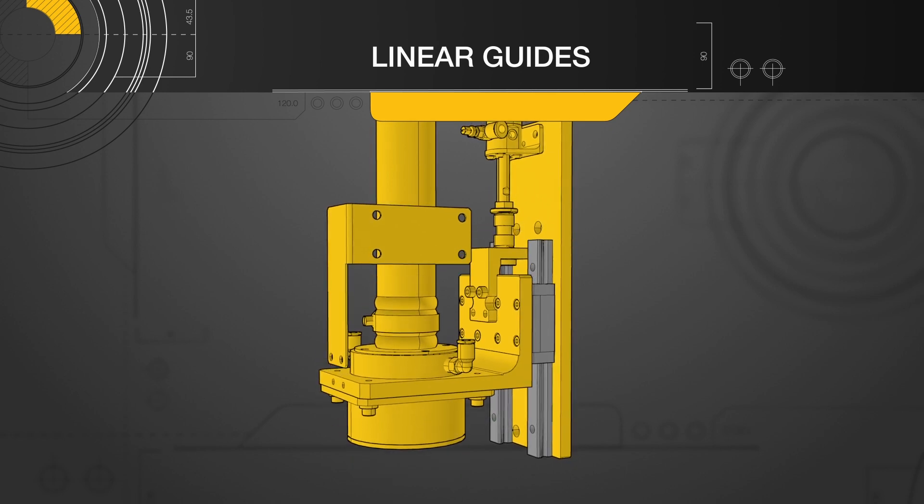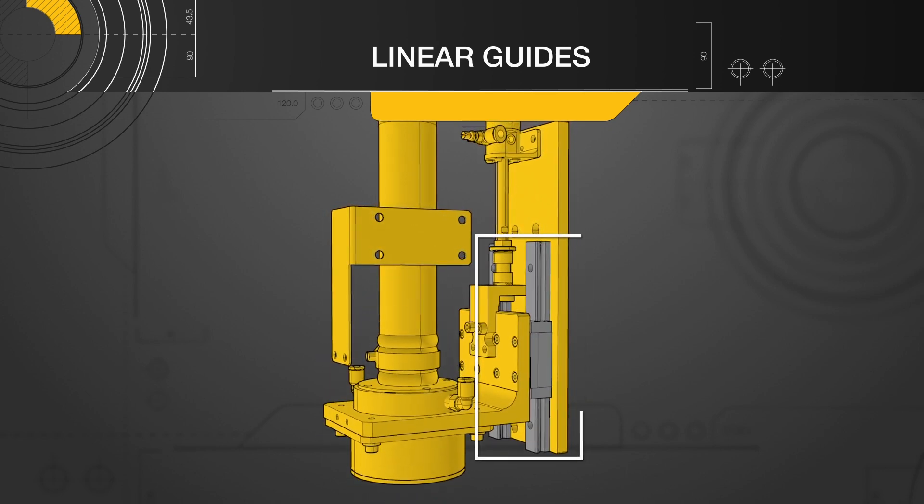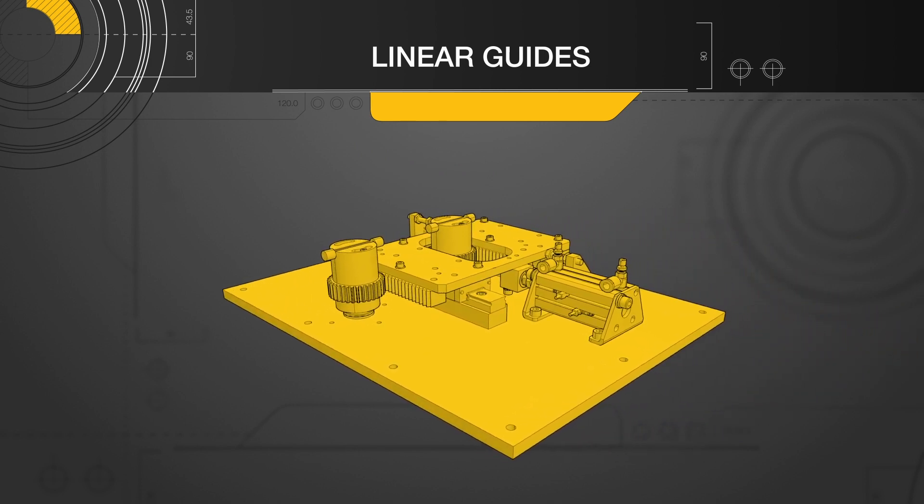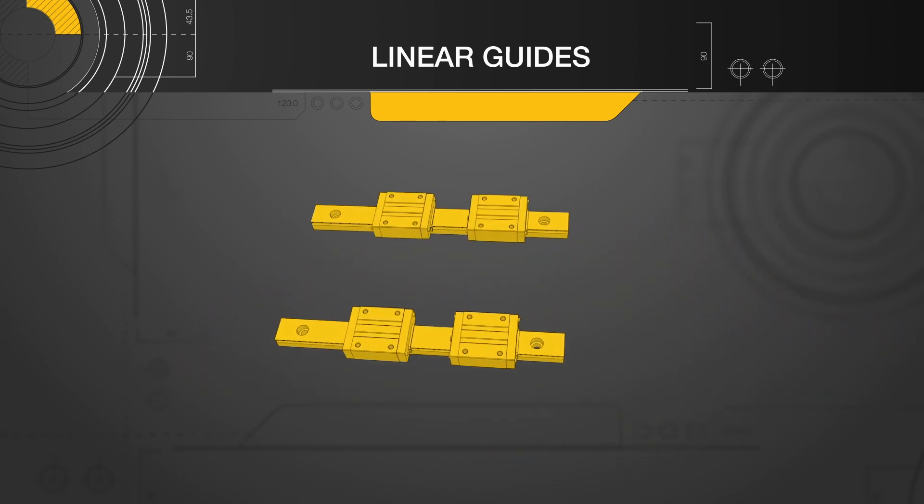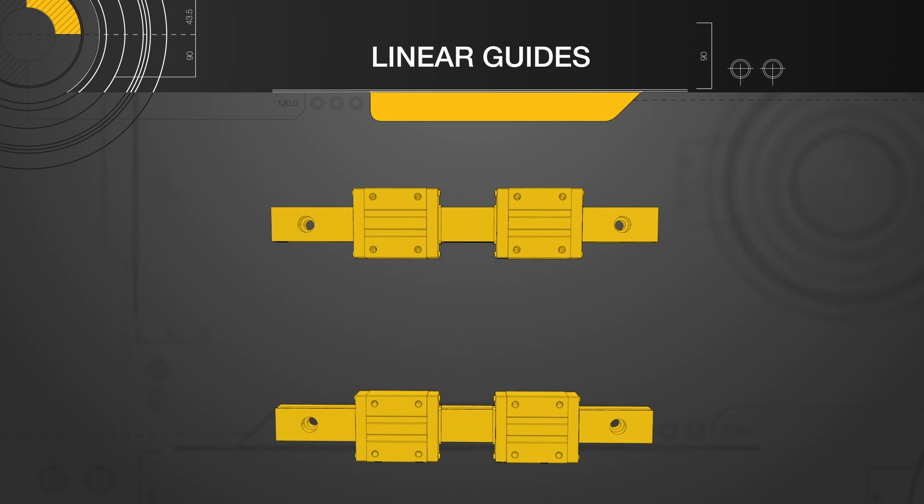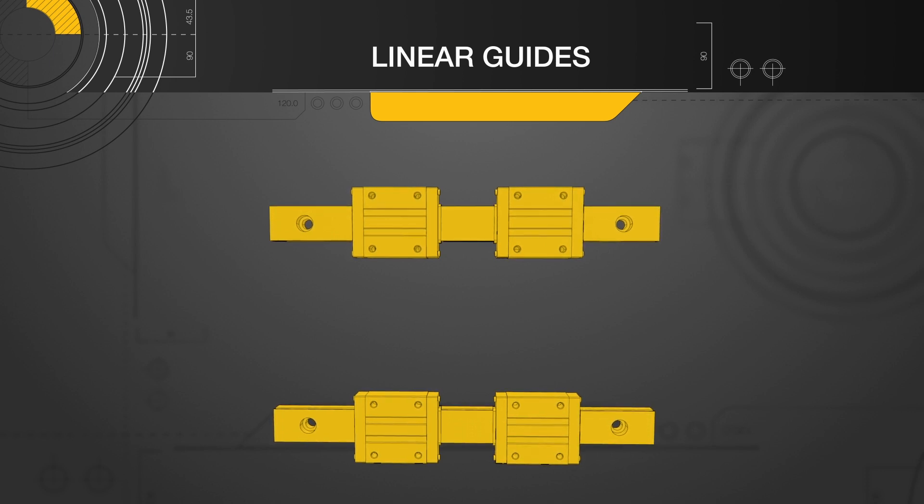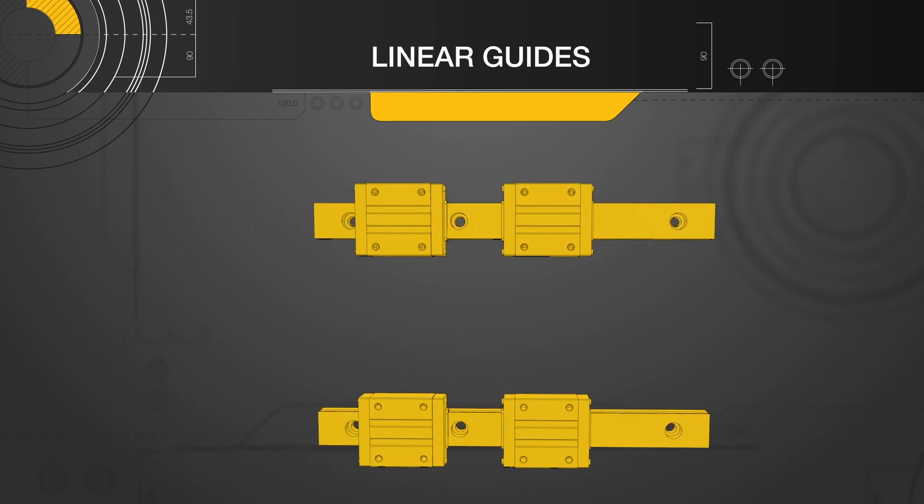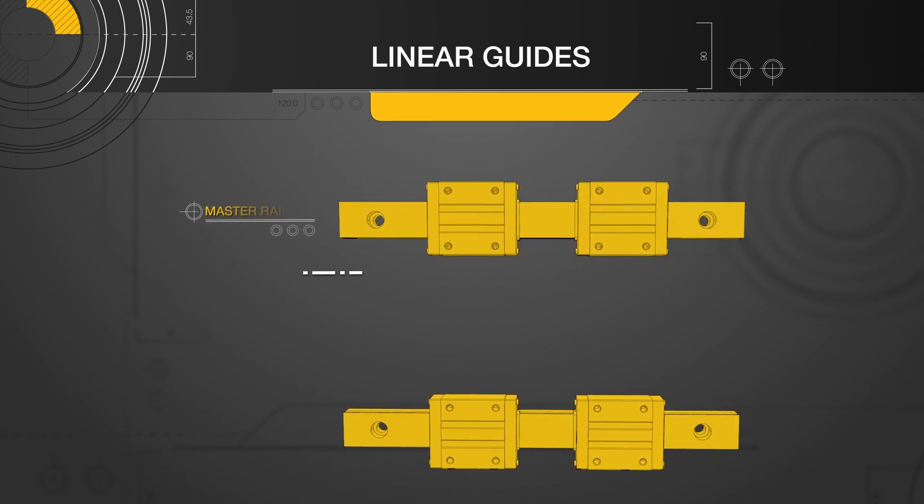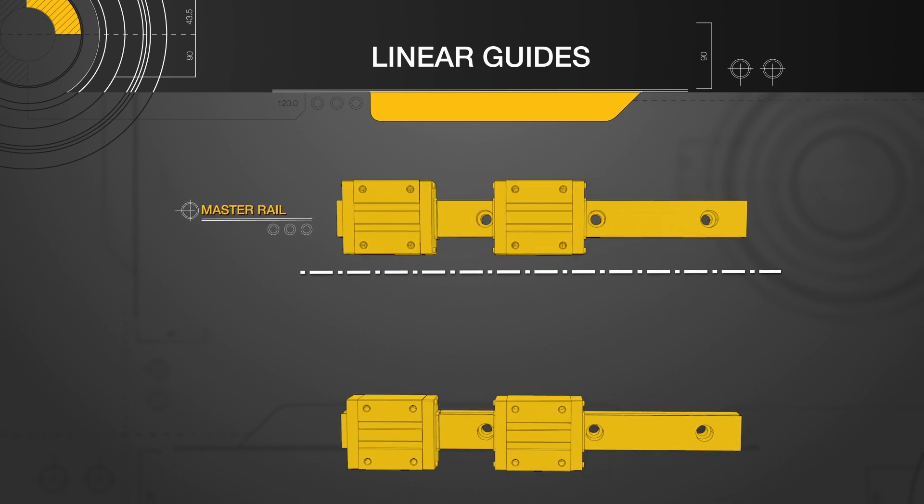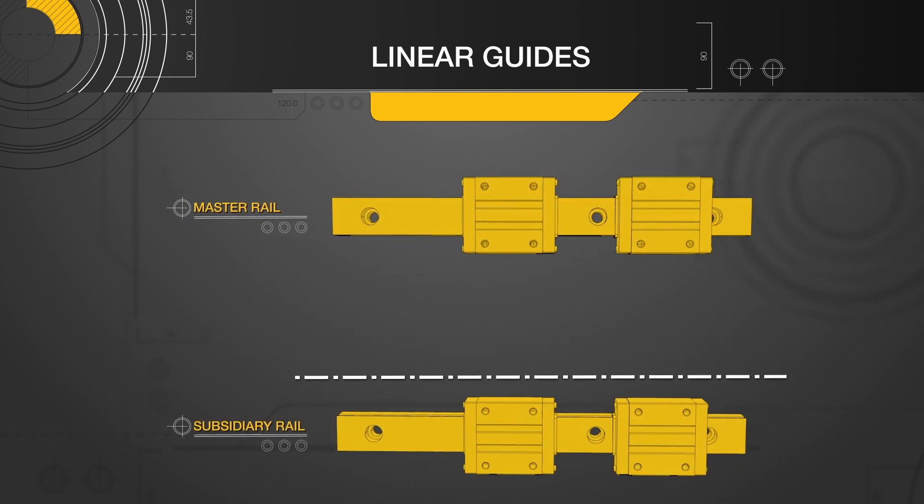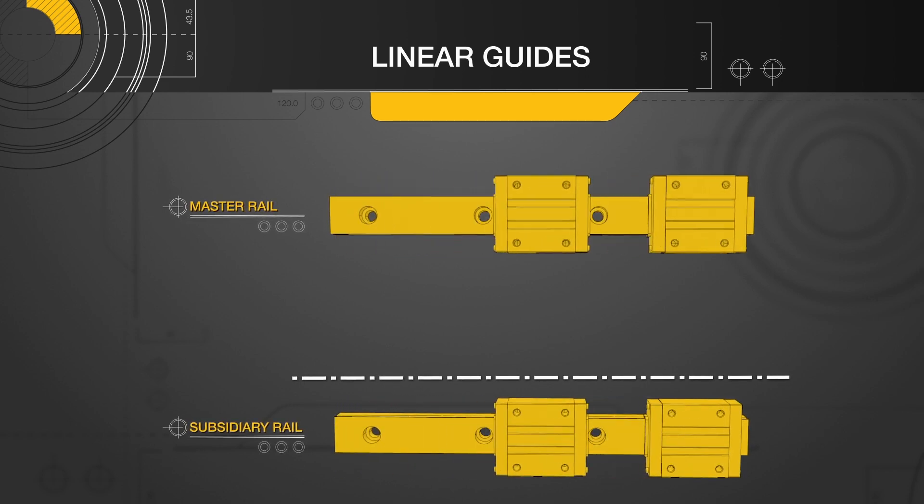We begin this lesson by looking at the standard mounting configuration of Linear Guides. It is most common to use Linear Guides in sets of two rails with two blocks each. This configuration provides stable support at each corner of a rectangular plate as well as encouraging even load distribution. The primary or master rail is the Linear Guide rail that is assembled and aligned first, followed by the subsidiary rail which should be aligned to the master rail.